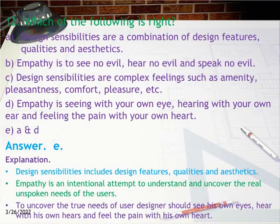Question 12: Which of the following is right? A) Design sensibilities are a combination of design features, qualities and aesthetics. B) Empathy is to see no evil, hear no evil and speak no evil. C) Design sensibilities are complex feelings such as amenity, pleasantness, comfort, pleasure, etc. D) Empathy is seeing with your own eyes, hearing with your own ears and feeling the pain with your own heart. E) A and D. Answer E. Explanation: Design sensibilities include design features, qualities and aesthetics. Empathy is an intentional attempt to understand and uncover the real unspoken needs of users — the designer should see with their own eyes, hear with their own ears, and feel the pain with their own heart.